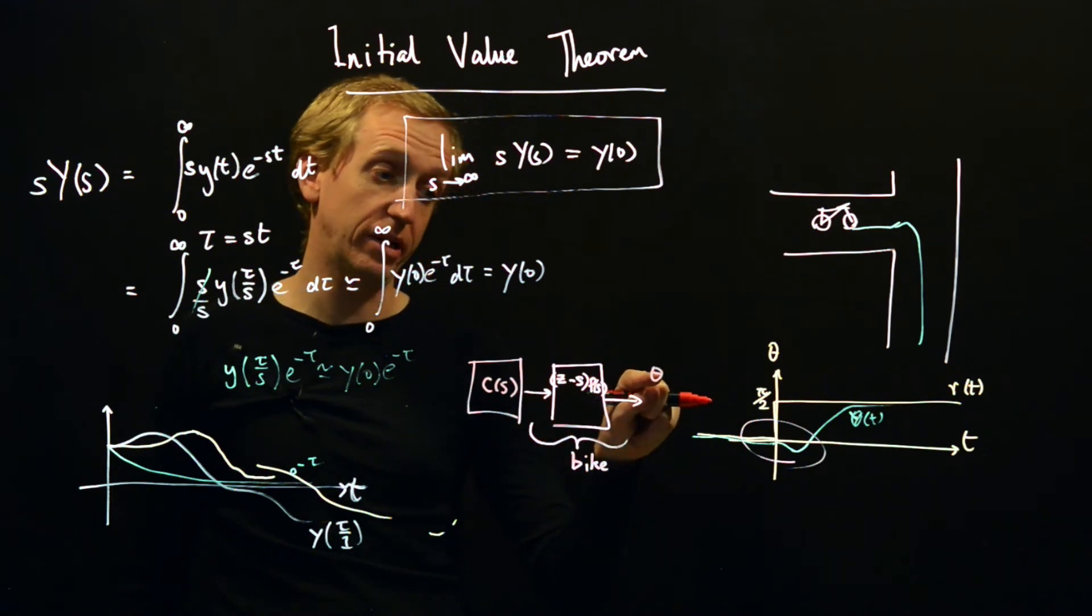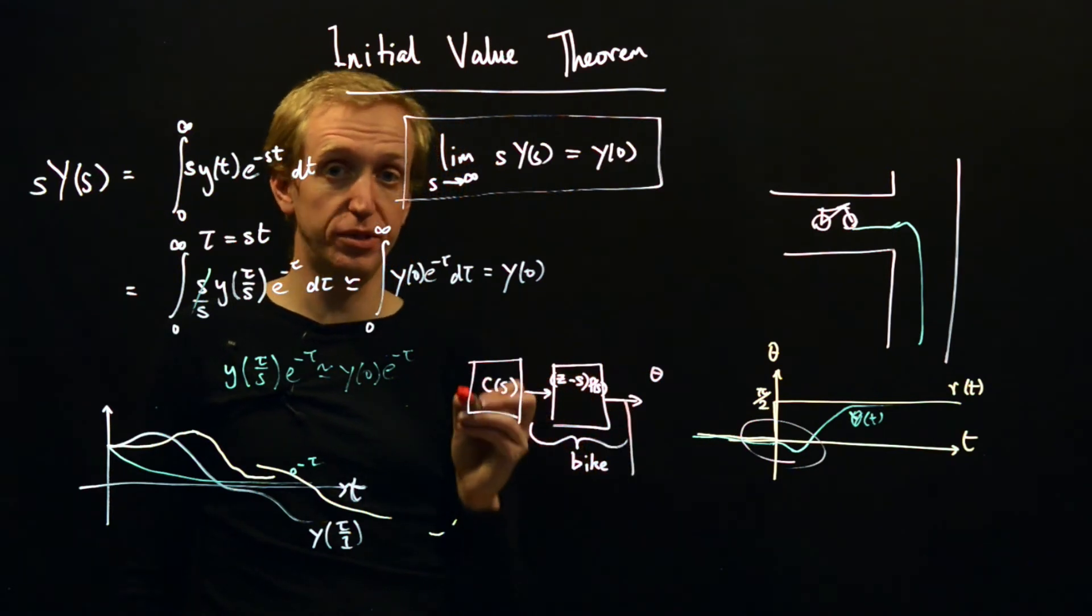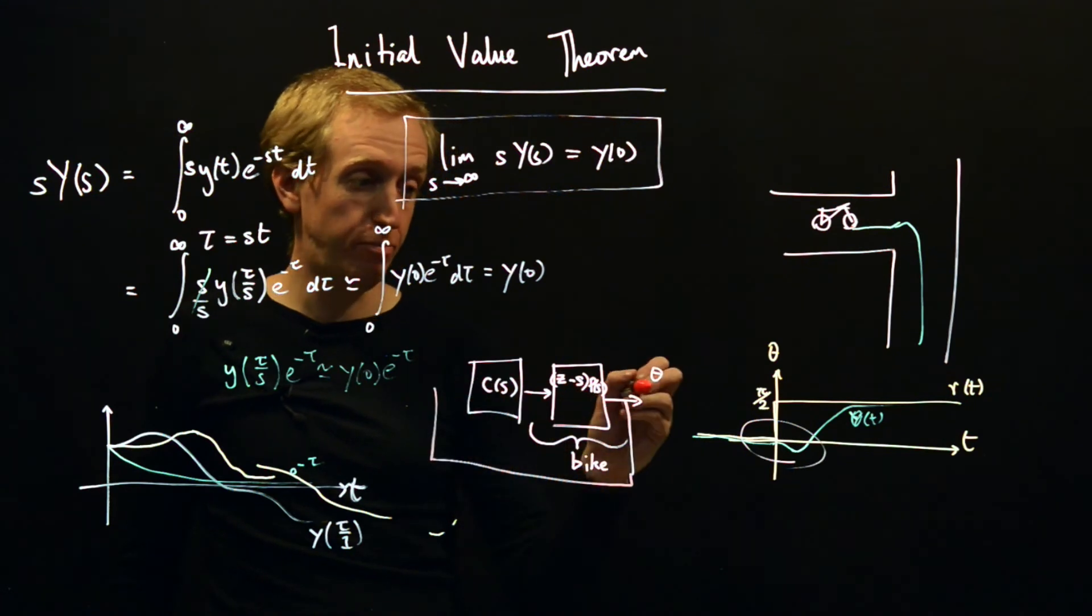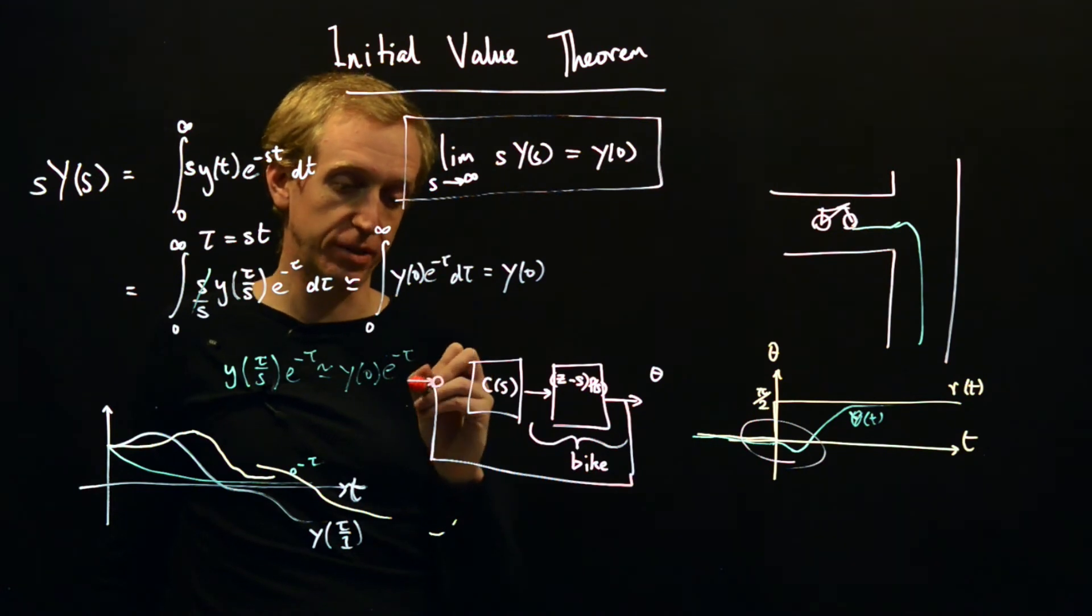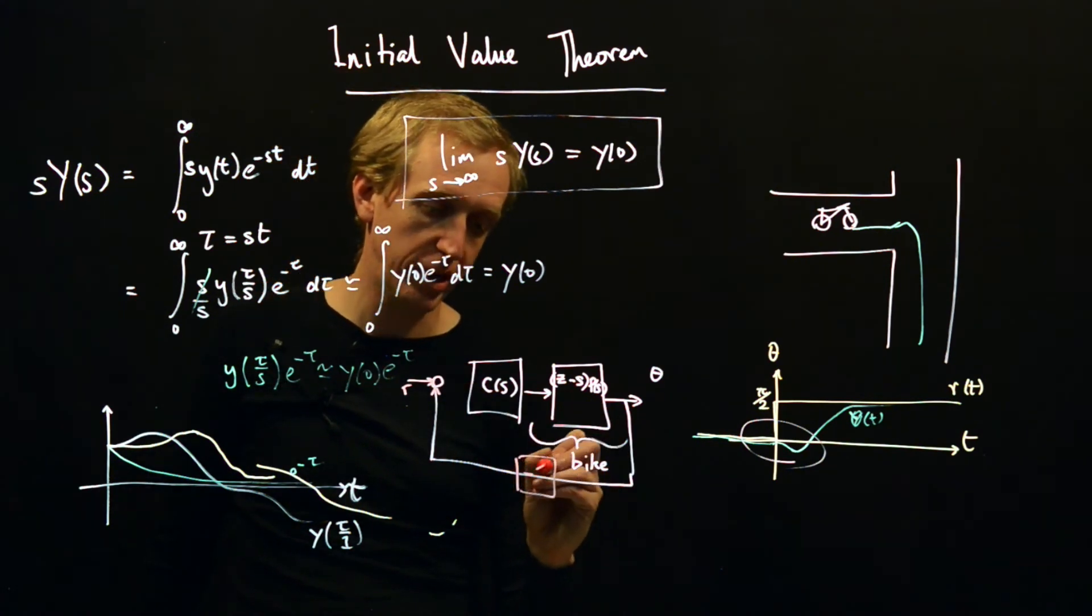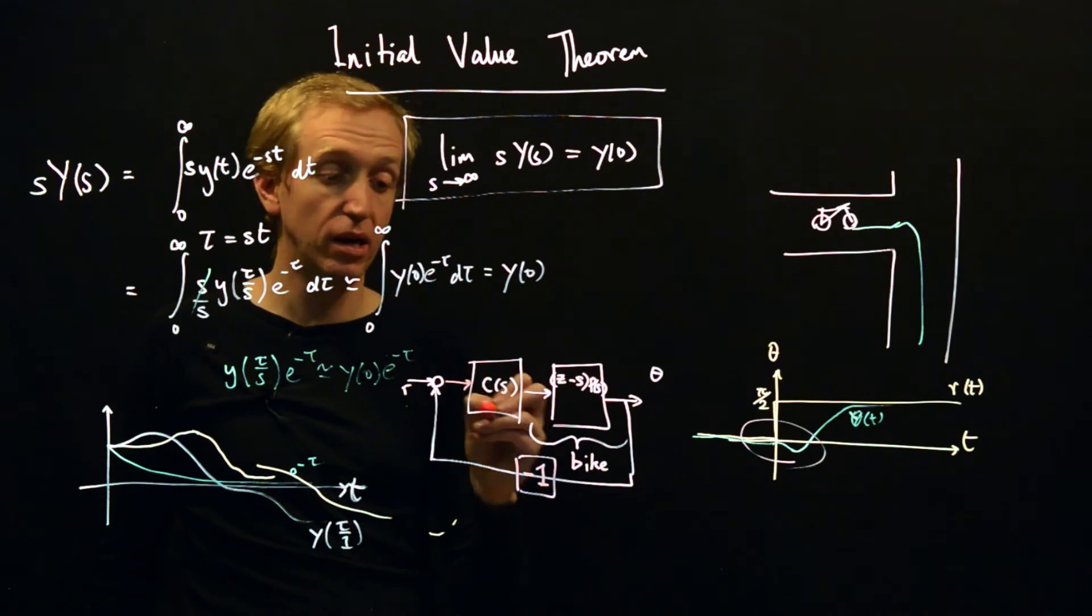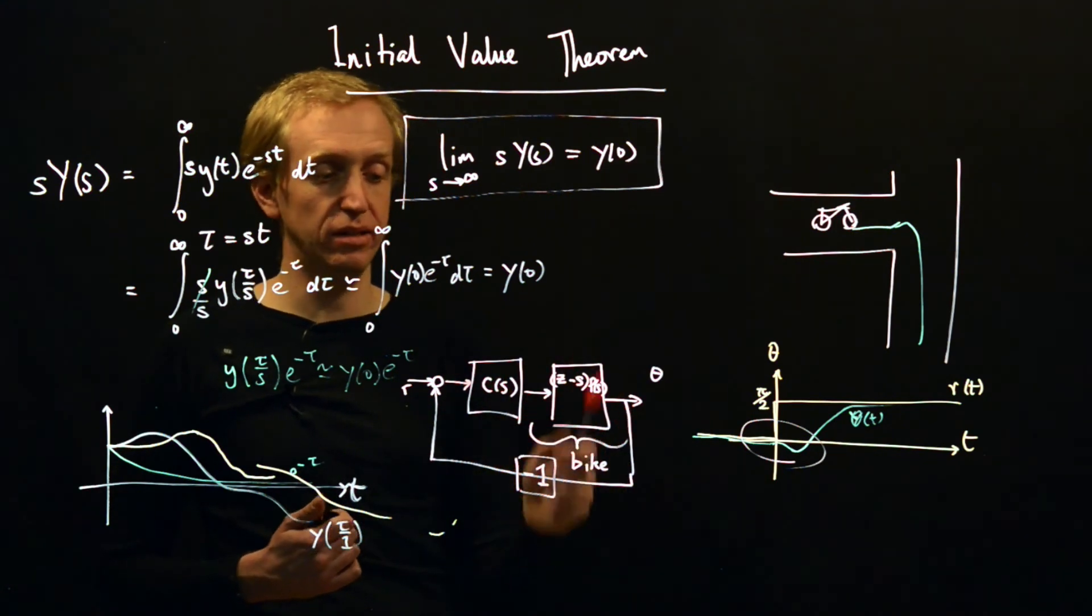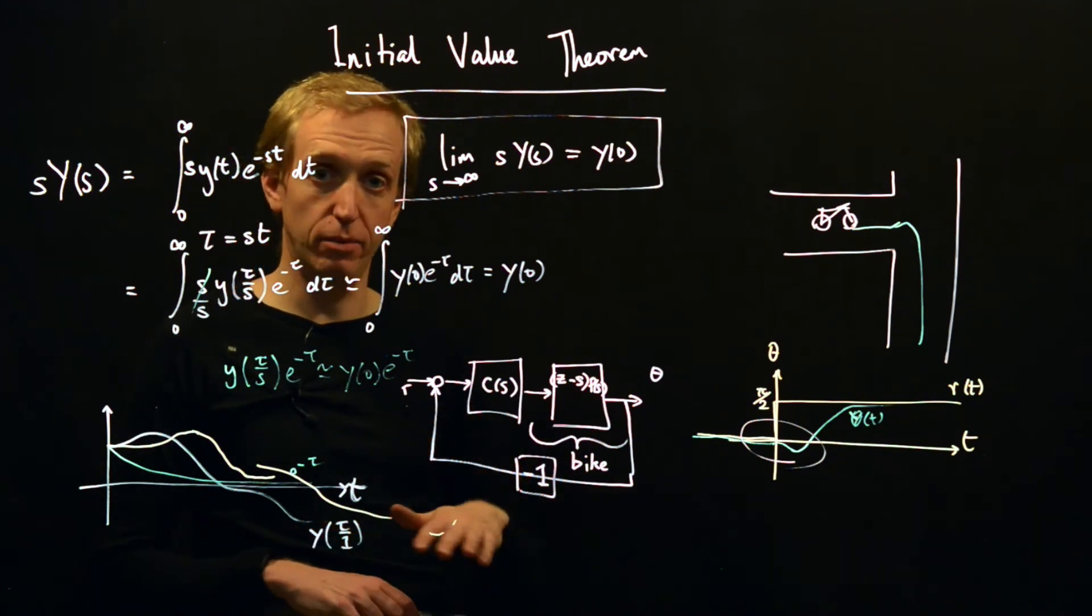Then no matter what we do with our control system, the output of this is the heading of the bike θ. This is what we're doing to the handlebars. Our control system is us in this case. It decides what to do based on the difference. So we decide what we want to do with our controller based on the difference between where we want the bike to go and where the bike is actually going. We should put a minus one in here for negative feedback. We measure the angular position of the bike, we compare it to our reference, we decide what we want to do with our control system. And the claim is that no matter what we do, provided that this is a stable closed loop transfer function, we'll always have this effect of going the wrong way before going the right way.